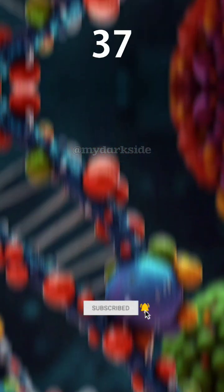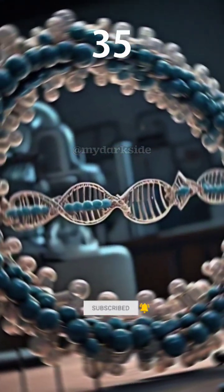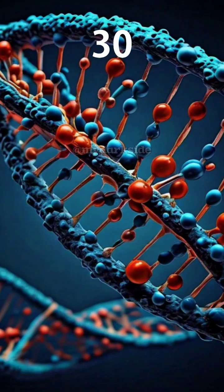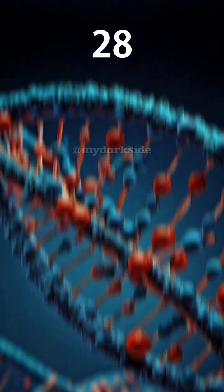Think of RNA polymerase as a molecular copy machine. As RNA polymerase moves along the DNA strand, it reads the DNA code and builds a complementary strand called messenger RNA.